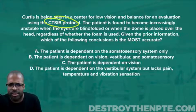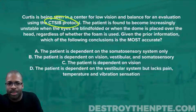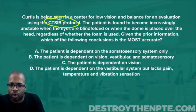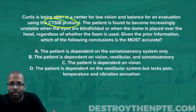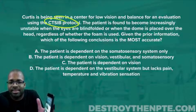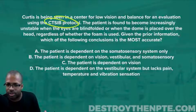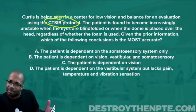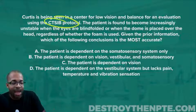The question tells us the patient becomes increasingly unstable when the eyes are blindfolded or when the dome is placed over the head, regardless of whether the foam is used. That's quite a big sentence. If you're familiar with CTSIB, you know there are six conditions total.